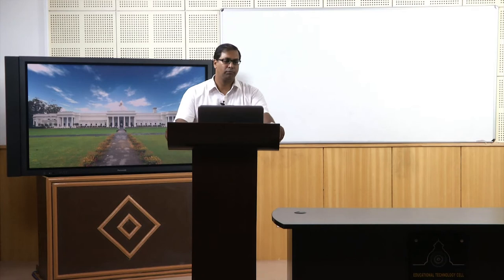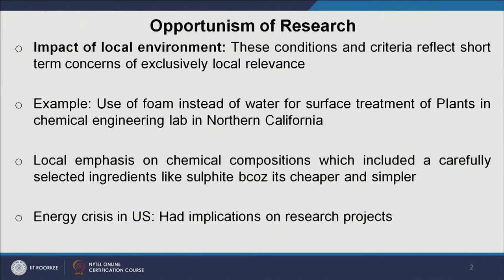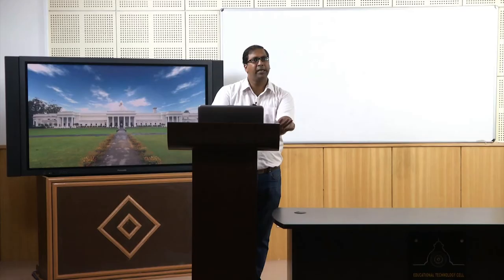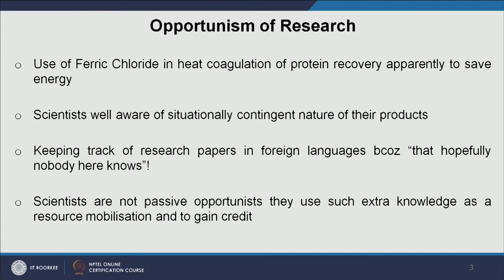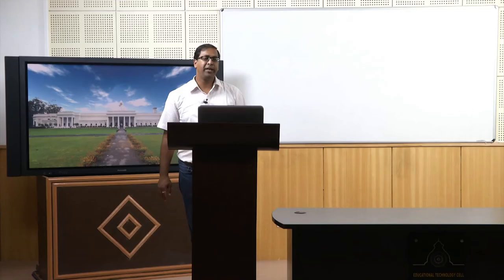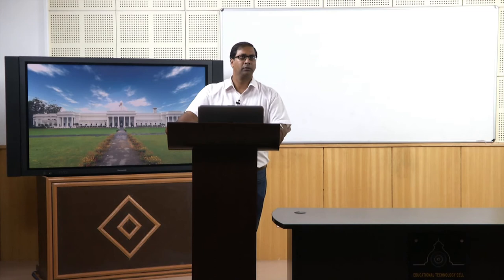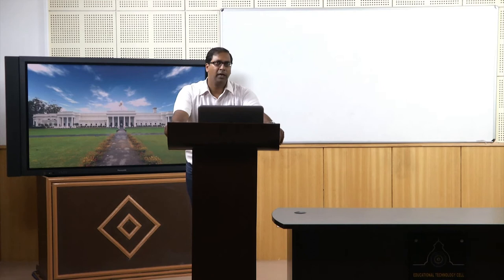There can be another example: the energy crisis in the US during the time of Karina Satina's research had implications for the very research projects being undertaken. For instance, ferric chloride was used in a heat coagulation method of protein recovery, apparently to save energy. So in order to address the problem of the energy crisis, scientists had to make use of certain chemical compositions.